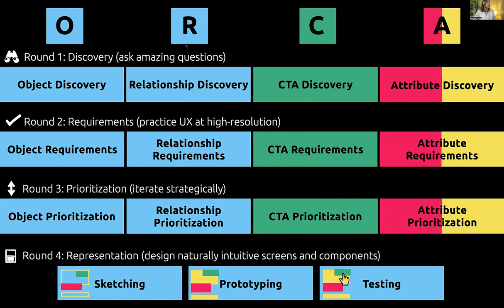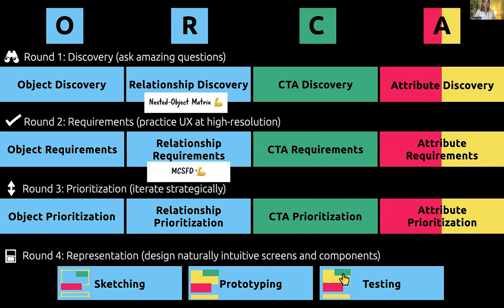Let's focus on the R pillar, especially with the first three steps. We've got the nested object matrix as one of the main artifacts in discovery. Then there's what I call my 'cat-saving fire department' step. And then relationship prioritization, where we go into the nav flow. That's where I'm trying to get before I hand it off to Karen.